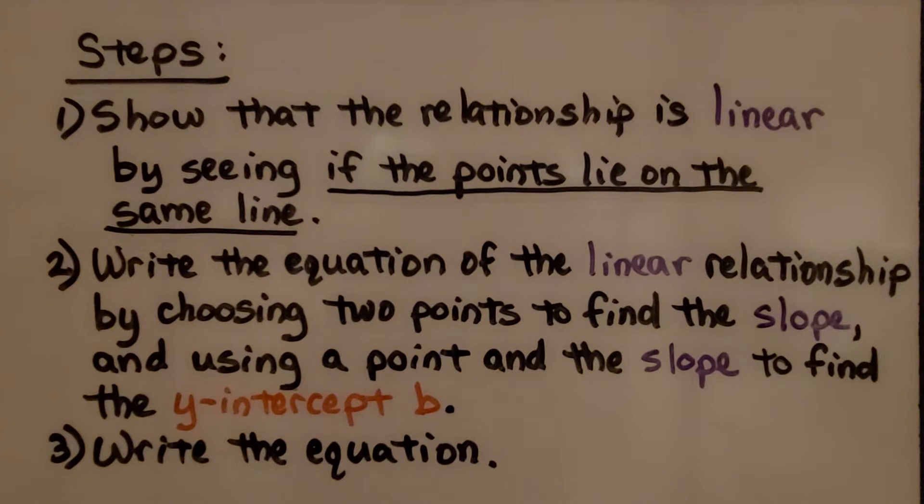Here are the steps to finding the equation of a linear relationship. First thing we do is show that the relationship is linear by seeing if the points lie on the same line.